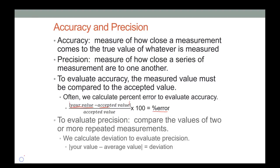To evaluate precision, compare two or more repeated measurements. Calculate something called deviation — your measured value minus the average of all the values — which tells you how far off your value is from the average.